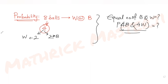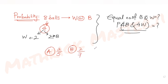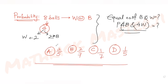This is a question on conditional probability. The answer choices given are: two over five, two over seven, one over seven, and one over five. We need to figure out the correct answer — the probability that two black and two white balls are drawn from a bag which contains equal number of black and white balls.